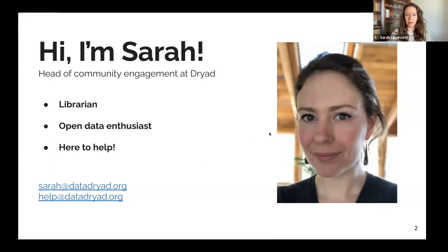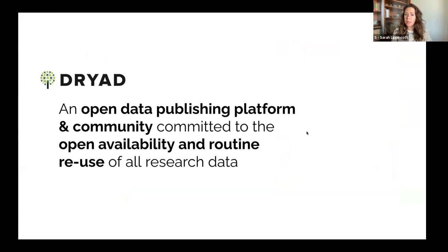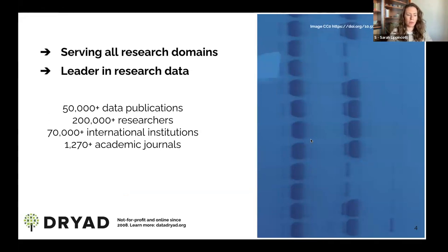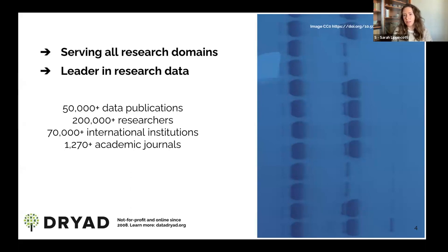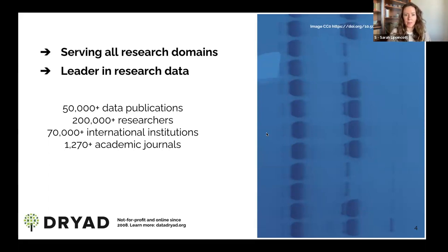If you have questions about Dryad or my presentation, you can reach me at sarah@datadryad.org, or reach our help desk at help@datadryad.org. Dryad is an open data publishing platform and community committed to the open availability and routine reuse of all research data. We serve all research domains, publishing data in every discipline and any format. We've been publishing data since 2008 and now have over 50,000 data publications representing the work of over 200,000 researchers at over 70,000 institutions worldwide, with datasets connected to articles in over 1,200 different academic journals.